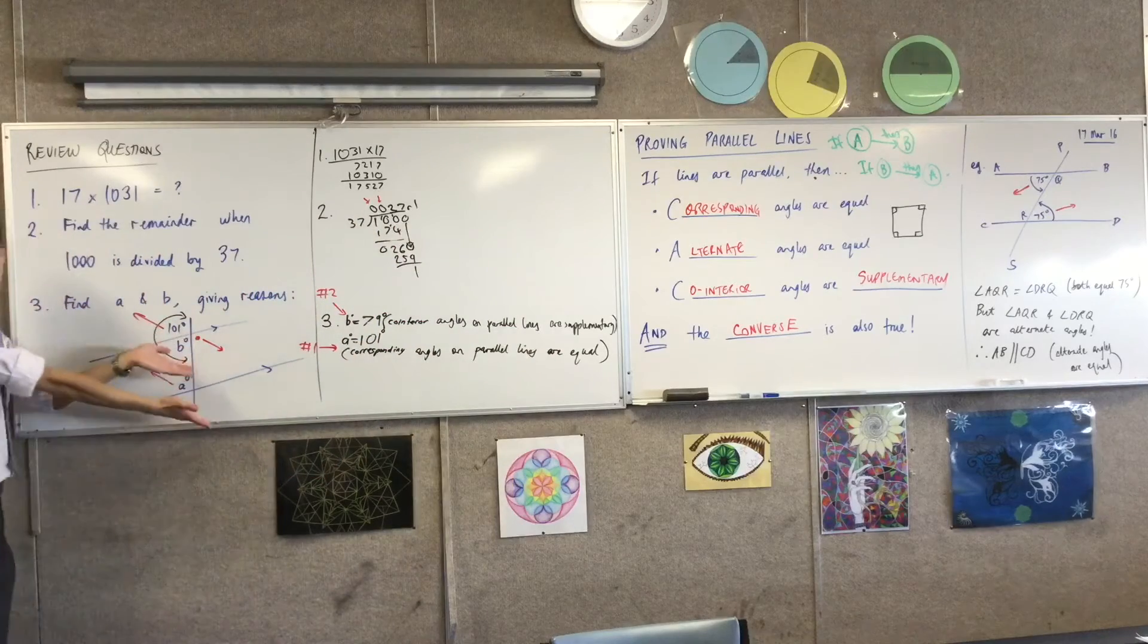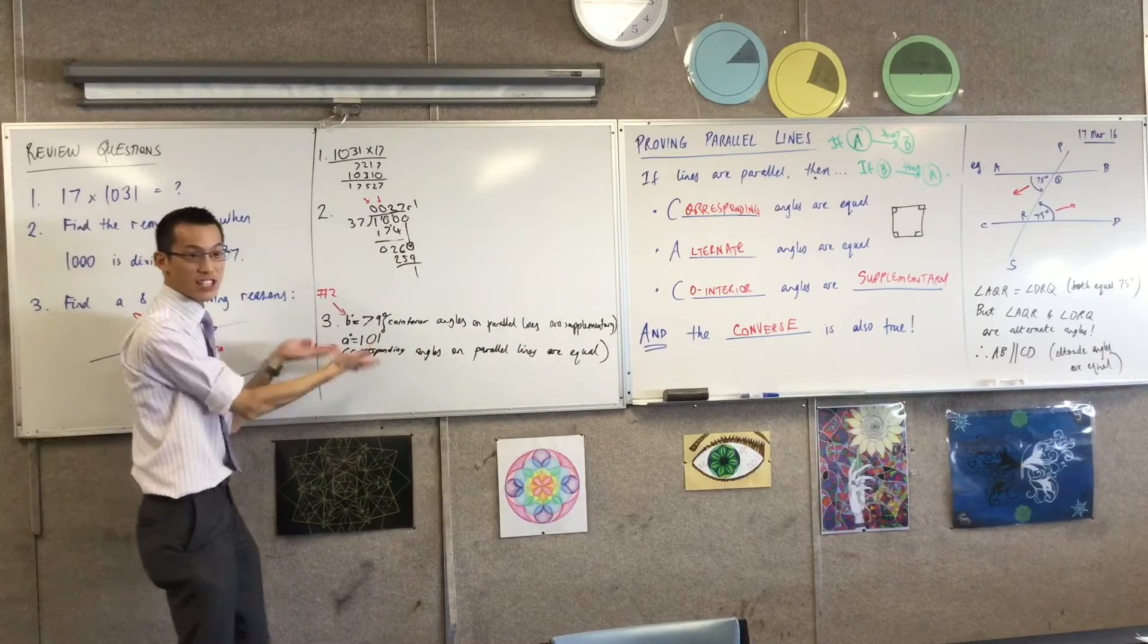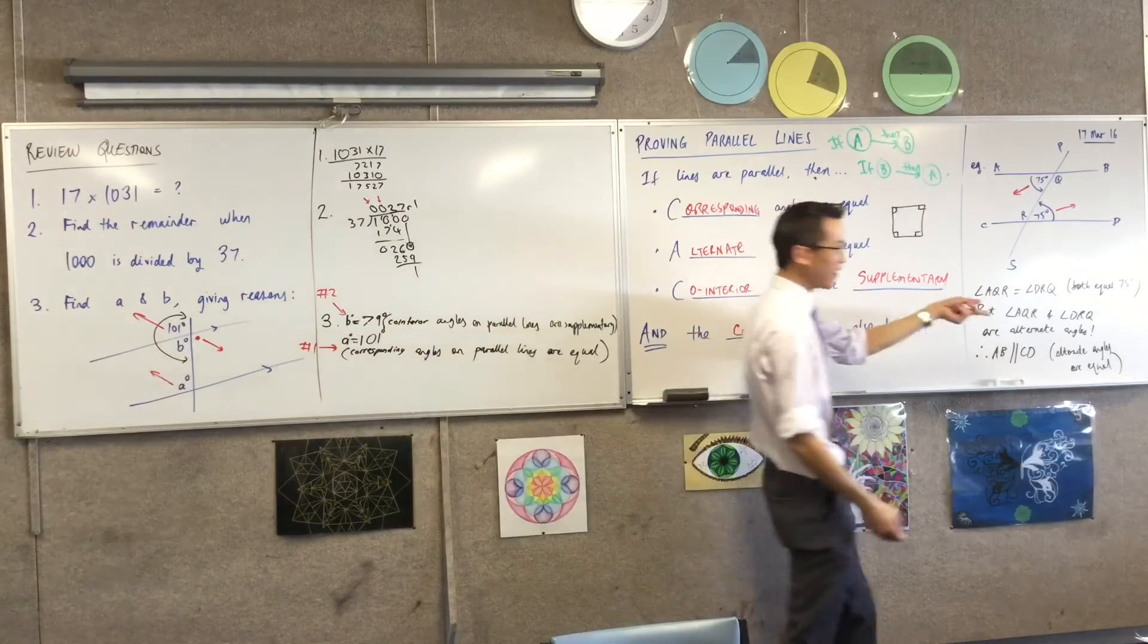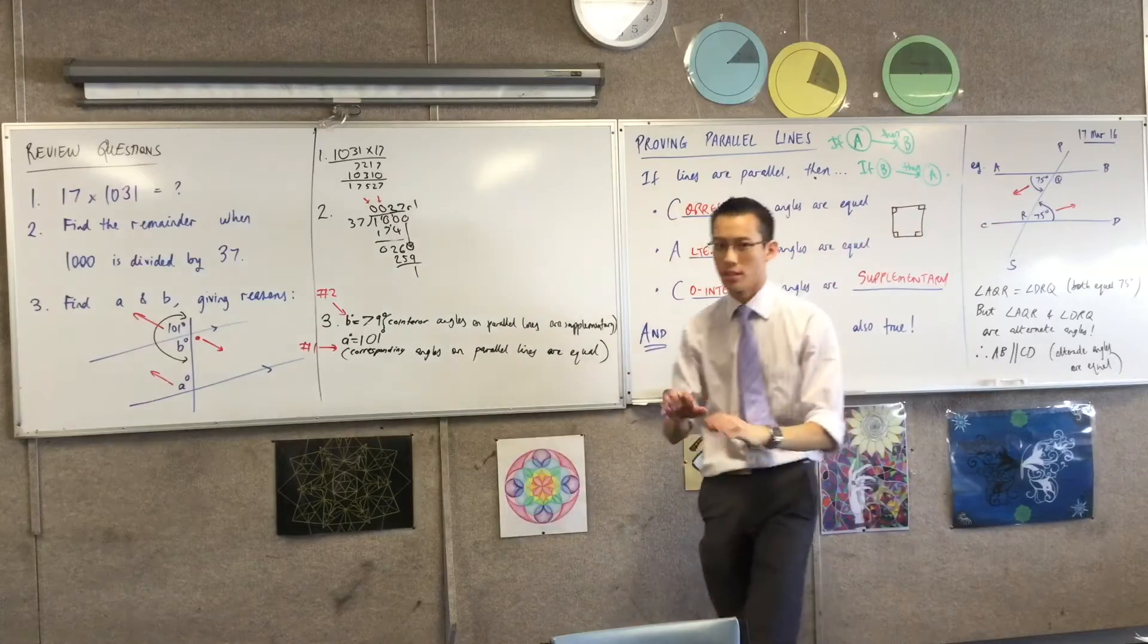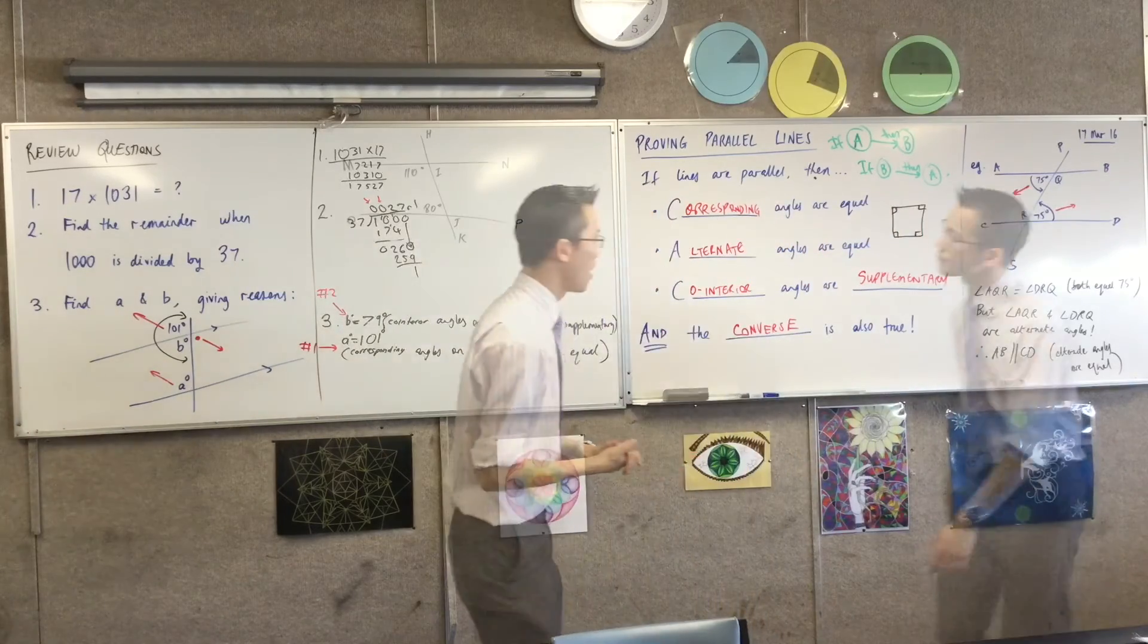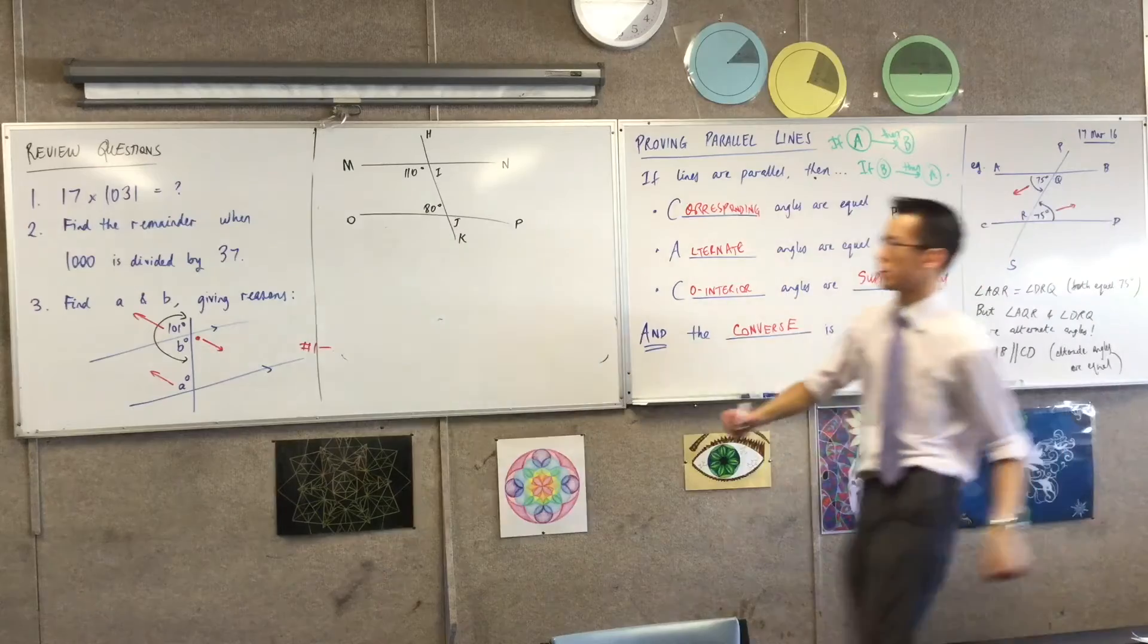Here, you know the lines are parallel, so you say something about the angles. Here, you know something about the angles, so you can say the lines are parallel. Does that make sense? So here is, I should label it, here's example two.